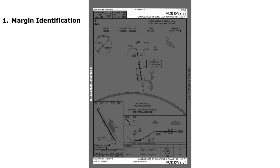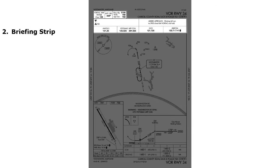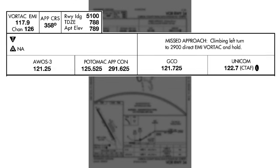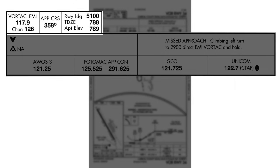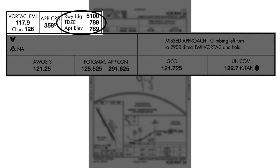Moving on from the margin identification, we'll look at the briefing strip, the second element. The briefing strip is split into three different stacks. The top stack is procedural information: the primary navigation type, ID, and frequency. This is the VOR approach, so the primary navigation is going to be off the VORTAC at EMI — the Westminster VORTAC — with a frequency of 117.9 and channel 126 for military use. Next to that is the inbound approach course, the final approach course, 358 degrees magnetic. And to the right, the available landing distance of 5,100 feet.